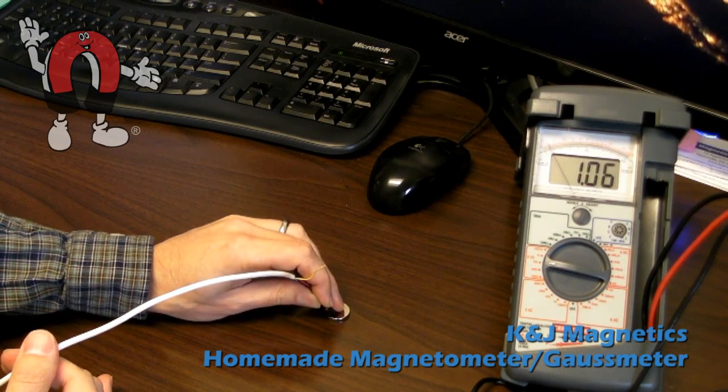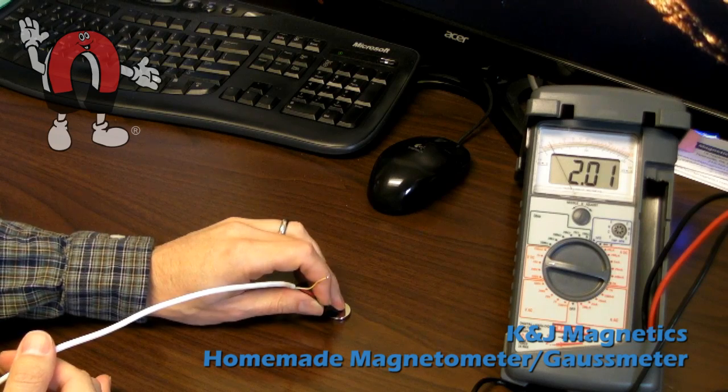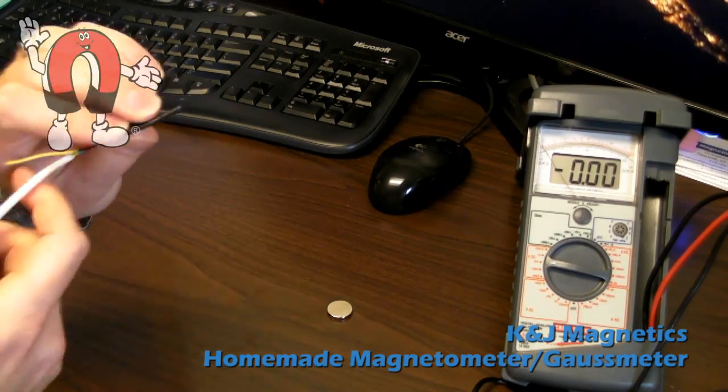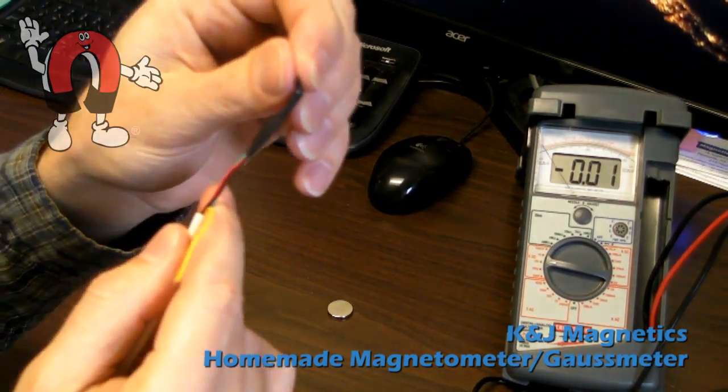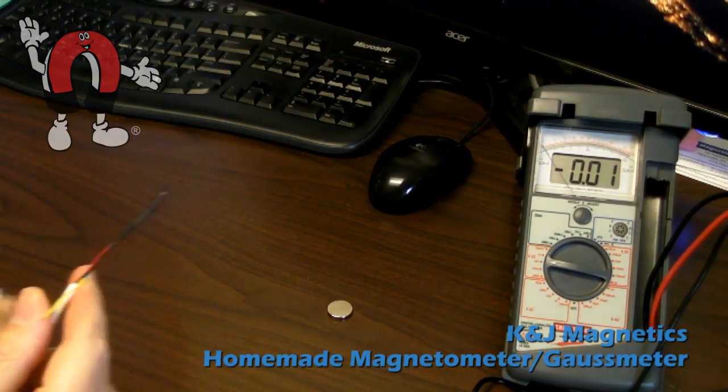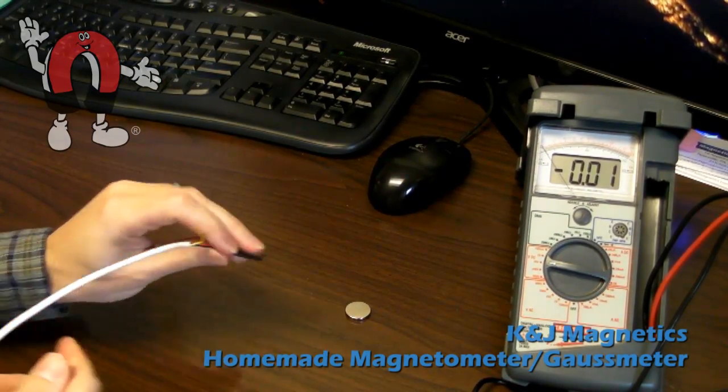Note that the reading you see on a measurement like this is going to be less than the theoretical surface field because the sensor has some thickness and you're measuring actually a little bit away from the surface of the magnet. Smaller magnets, this can make a big difference.